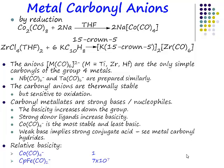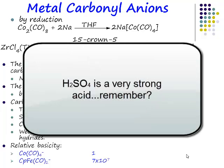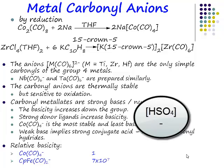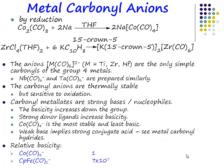Now remember the relationship between basicity and acidity. Take sulfuric acid — a very strong acid. The easiest way to understand why sulfuric acid is a very strong acid is because if you deprotonate it, you have a negative charge that can be delocalised. So the reason sulfuric acid is such a strong acid is because its conjugate base is very weak. Weak conjugate basicity means a very strong conjugate acid, and if you have a very weak conjugate acid, you have a very strong conjugate base. There is an inverse relationship between those two things.